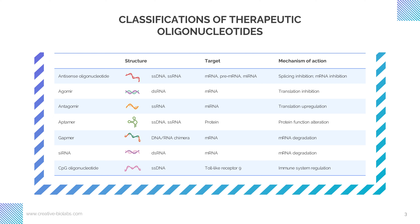Agomere is a double-stranded RNA that regulates the target gene's biological function by mimicking endogenous microRNAs that target mRNA. Agomere is also classified as mRNA-mimicking ASO. Antagomere, with a design based on the mature microRNA sequence, is single-stranded and is specially developed to inhibit the expression of endogenous microRNA. Antagomere is also known as anti-miRNA ASO.